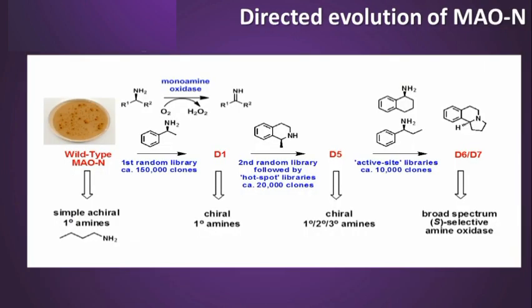This slide shows the laboratory evolution of an enzyme called MAO-N, monoamine oxidase N, where we have done exactly the process described. We take the wild-type enzyme, generate libraries, and screen those libraries of enzymes against different substrates to try to develop new biocatalysts with new activities towards the substrates shown on this slide. By this process of laboratory evolution, we can create new biocatalysts with new activities.